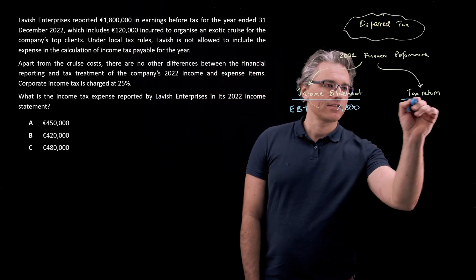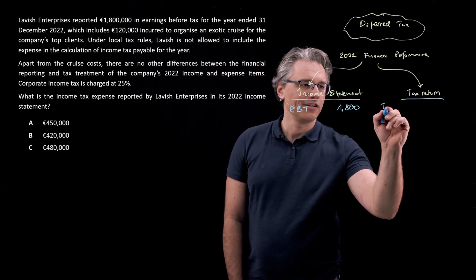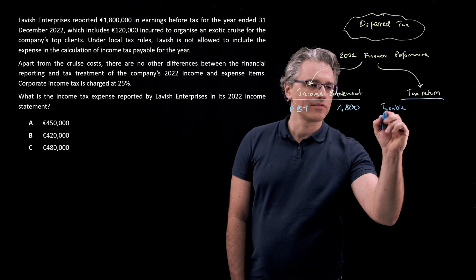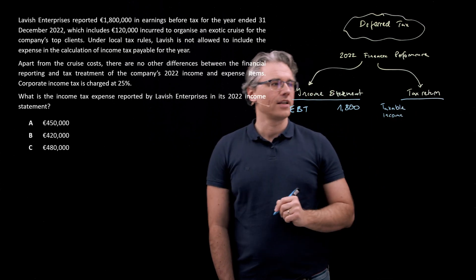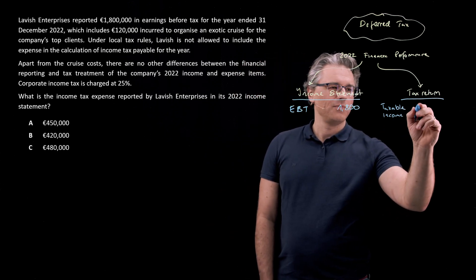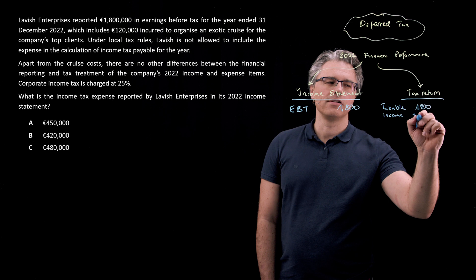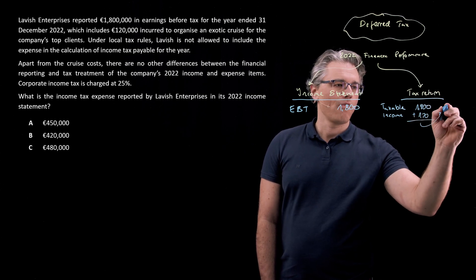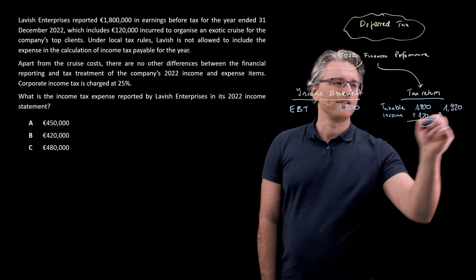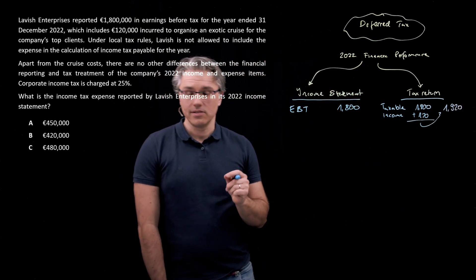However, from a tax return perspective, you can't include that 120,000 in the computation of your taxable income. So that's going to be 1,800,000, unfortunately, plus 120,000 to give a 1,920,000 basis on which tax is going to be computed.